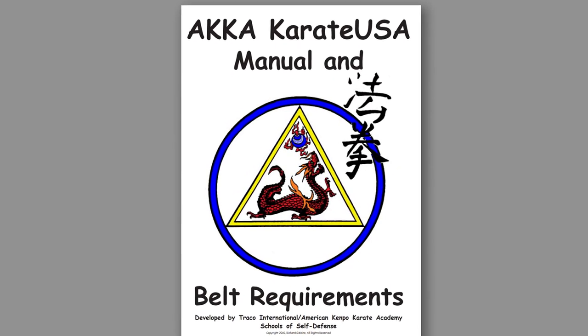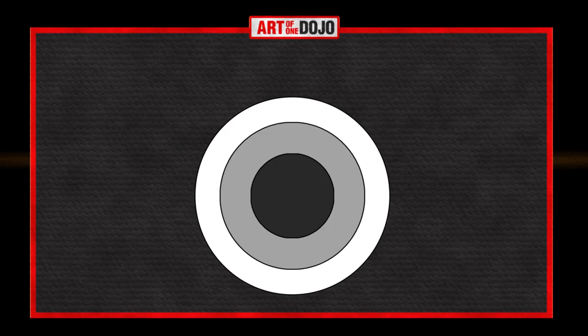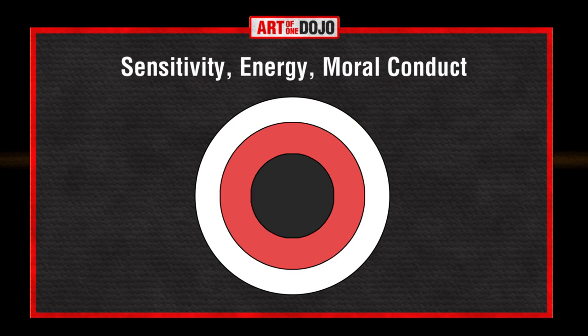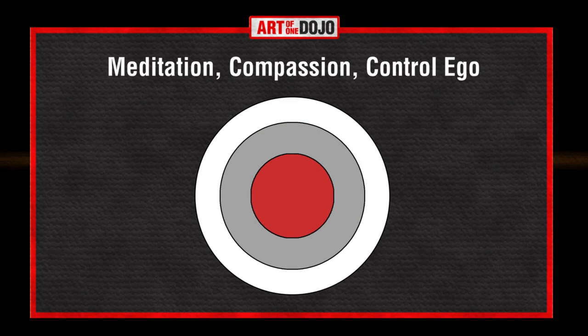I found one of their lower belt training manuals and it was quite the interesting read. It included the concept of the three circles of Kenpo. The first circle covers the basics of breathing, balance, and form. The second circle includes the development of sensitivity, the increase of energy in training, and the establishment of moral conduct. The third circle encompasses using meditation as a tool and embraces compassion, commonality, and controlling your ego. Interestingly, when I looked at the required techniques for the entry belt level, I immediately recognized them as techniques from the Tracy system — so within Kenpo in the United States, you're going to find a lot of overlap and commonality between these systems.